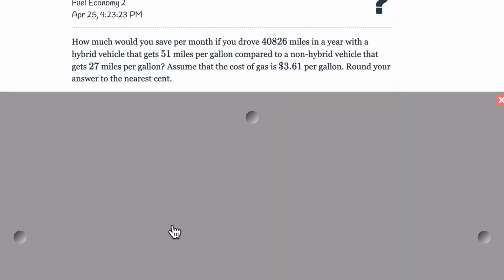So it says here, how much would you save per month? So notice, it's not per year, it's per month now. If you drove this many miles and the hybrid gets 51 miles per gallon, the non-hybrid gets 27 miles per gallon, there's the cost of gas. So take a moment, maybe pause the video, try it out, and then press play and we'll talk about the solution.